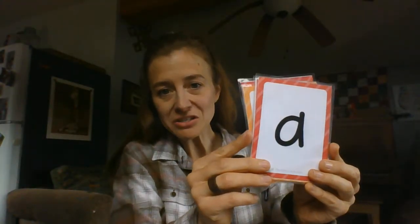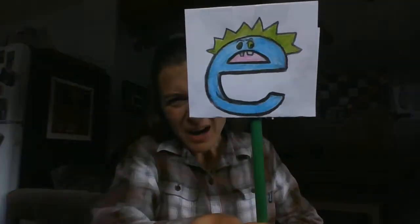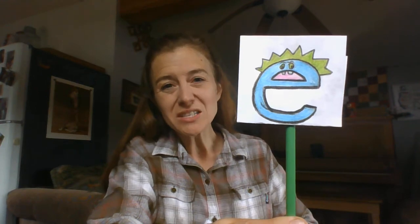Vowels are really special letters because they sometimes say their name in a word. Sometimes they have the short sound, which is ah, eh, ih, aw, uh. Or sometimes they have the long sound, A, E, I, O, U. But they only say their name if bossy E is around. E is the bossiest of all the vowels. He's so bossy, he tells the other vowels what to do.